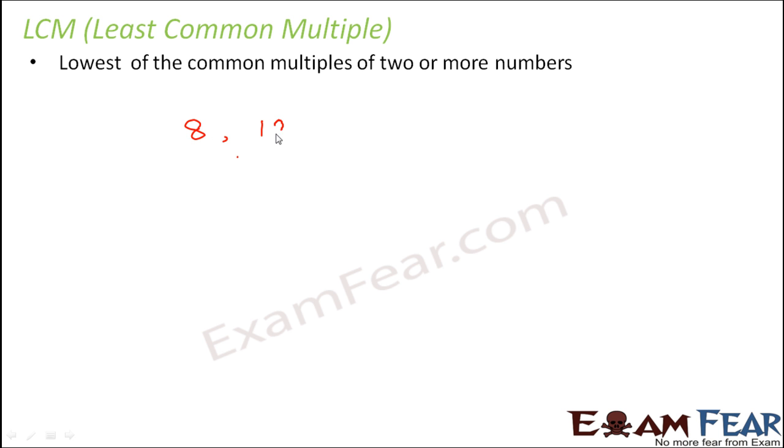Let us say you have two numbers 8 and 12. If you start looking at the multiples of 8, they would be 8, 16, 24, 32, 40 and so on.